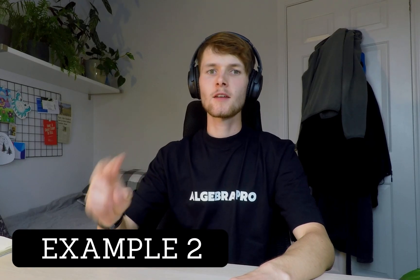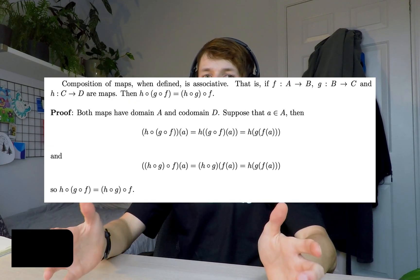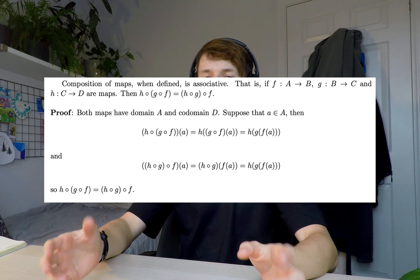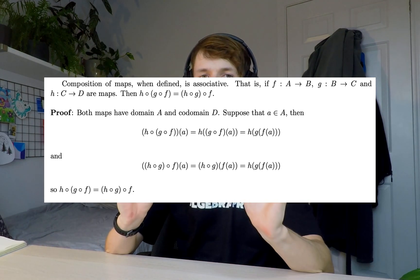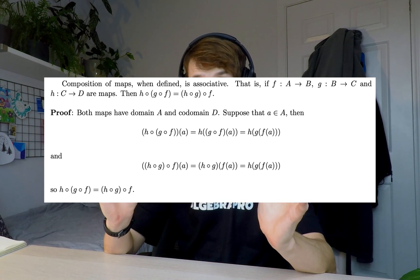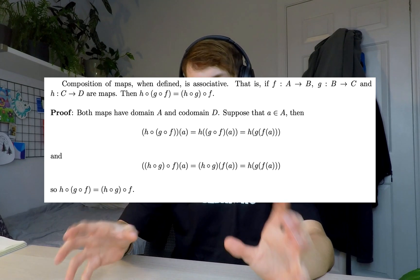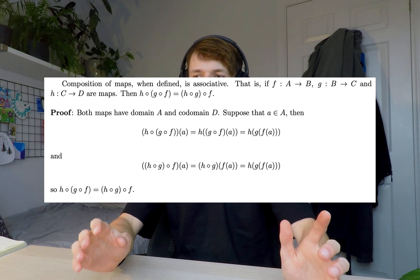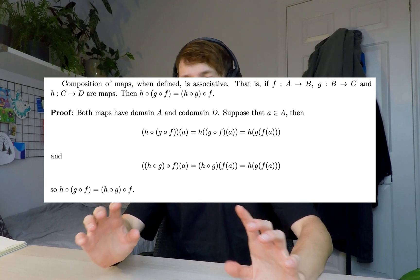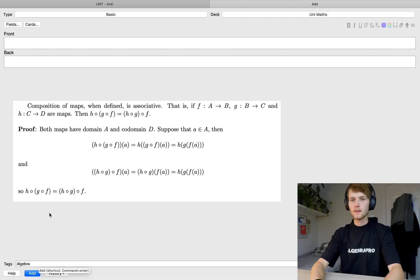The second example I'm going to give is for a notation-heavy proof. I'm going to use the proof that composition of maps is associative. As you can see there are lots of fiddly bits, lots of notation. For this one, what I suggest doing is breaking it down into its essence.